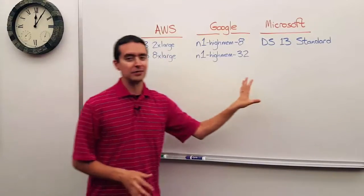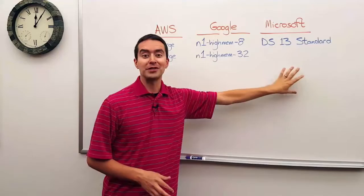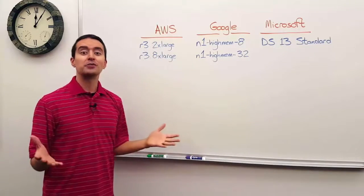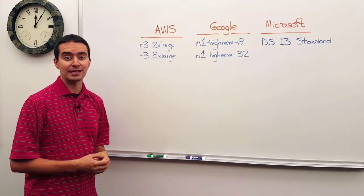So let's look at each of these individually. We'll start with Microsoft because there's only one option there. So if he's using Azure, there's just the DS13 standard. So there isn't much of a choice there. He would just go with that DS13 standard.